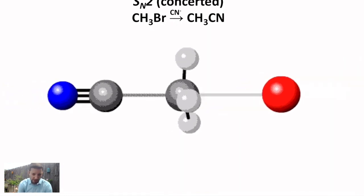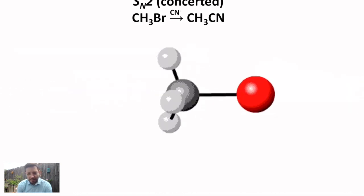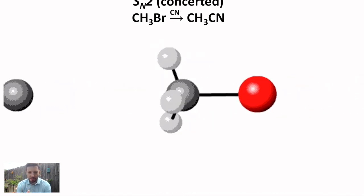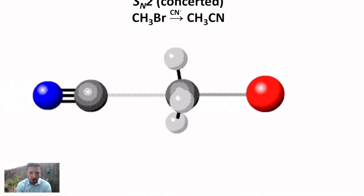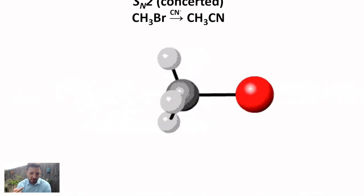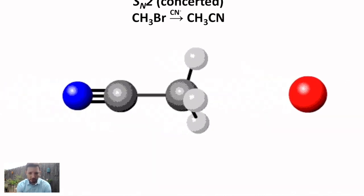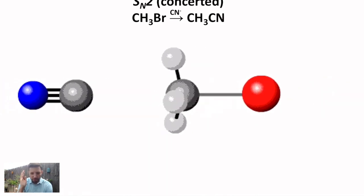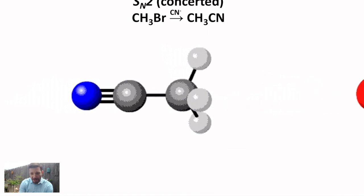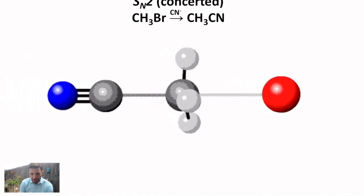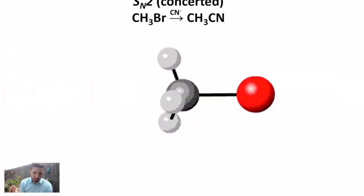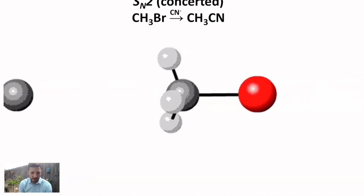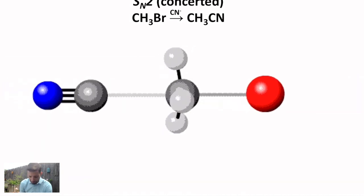You just go via this transition state. The second thing I want you to notice is that there's an inversion of the geometry around the carbon where the substitution is happening. It starts out tetrahedral, it ends up tetrahedral with a transition state halfway between. It's actually trigonal planar, so you get what's called an inversion of stereochemistry. And that's always true in the SN2 mechanism.